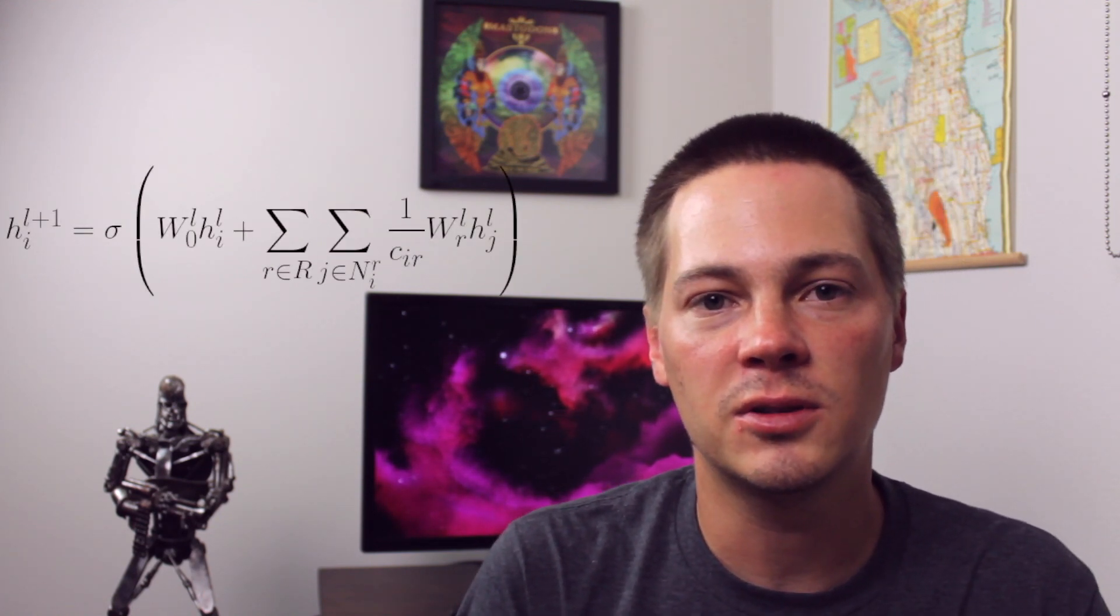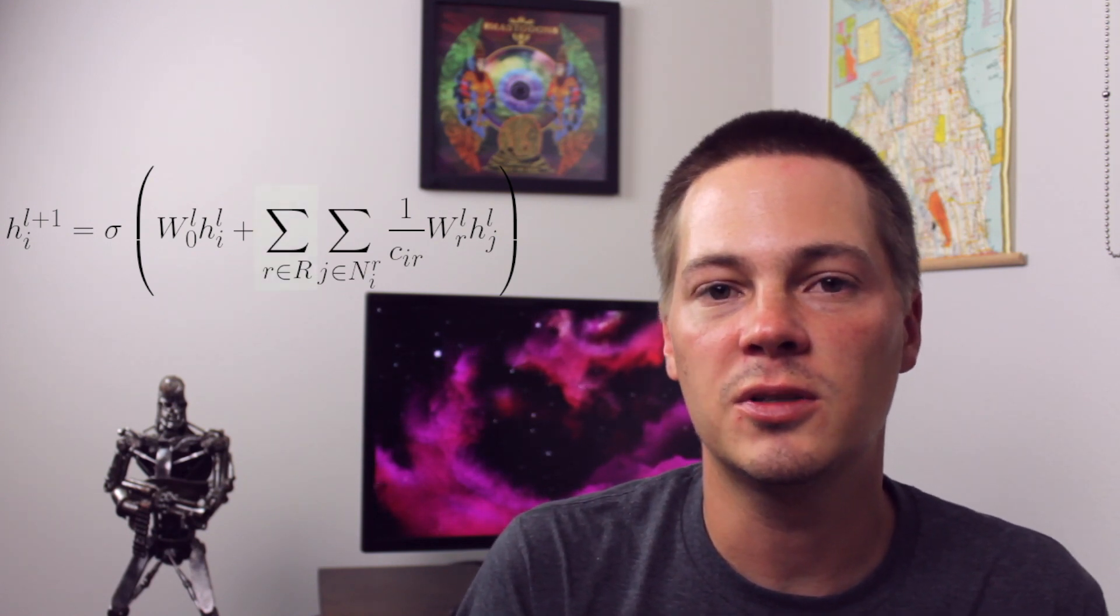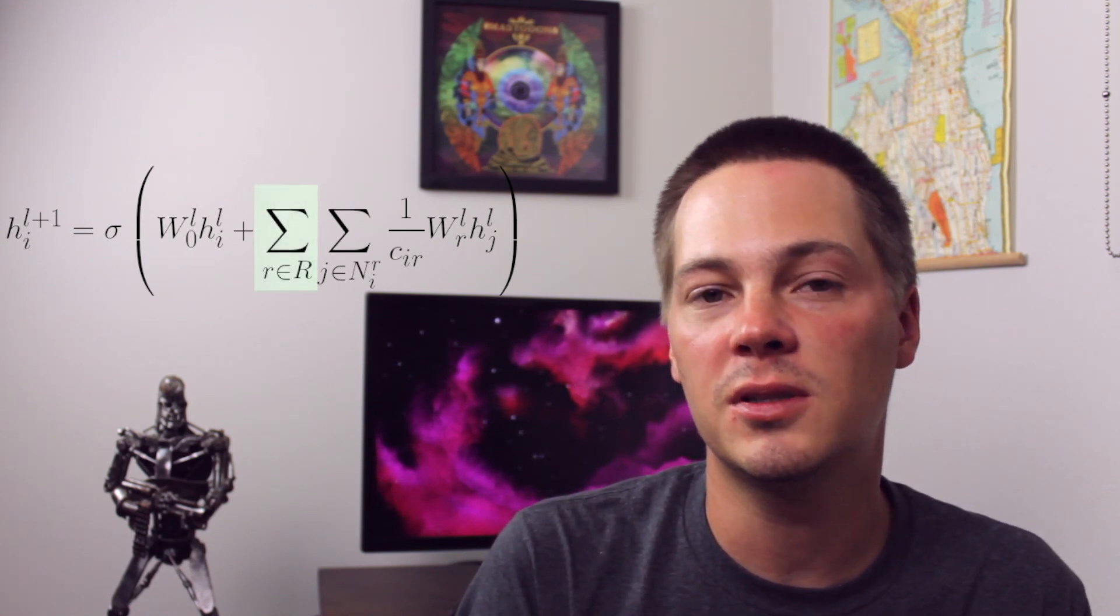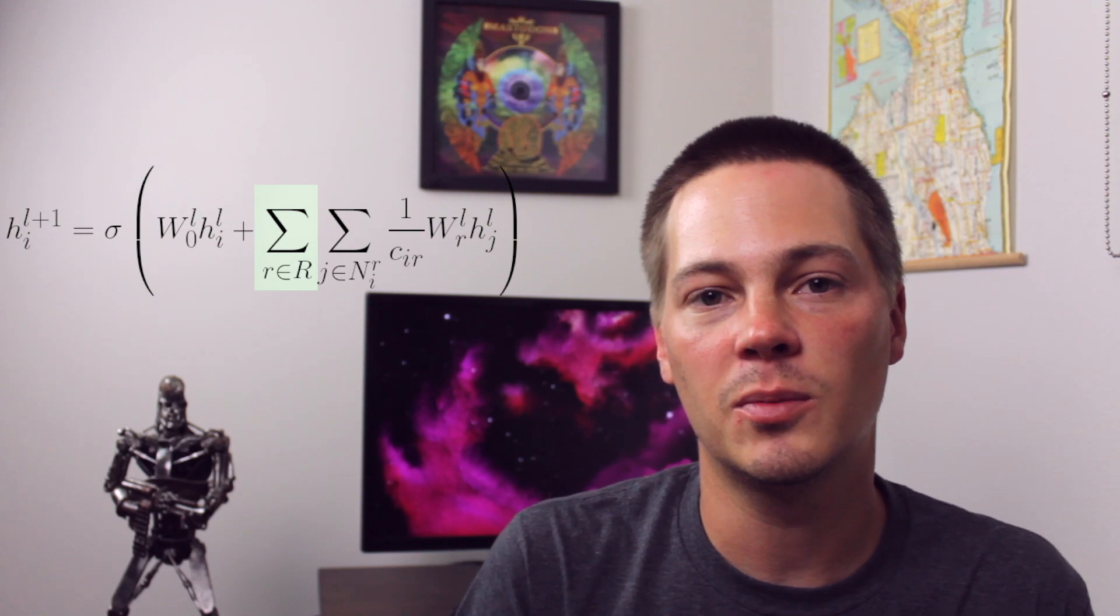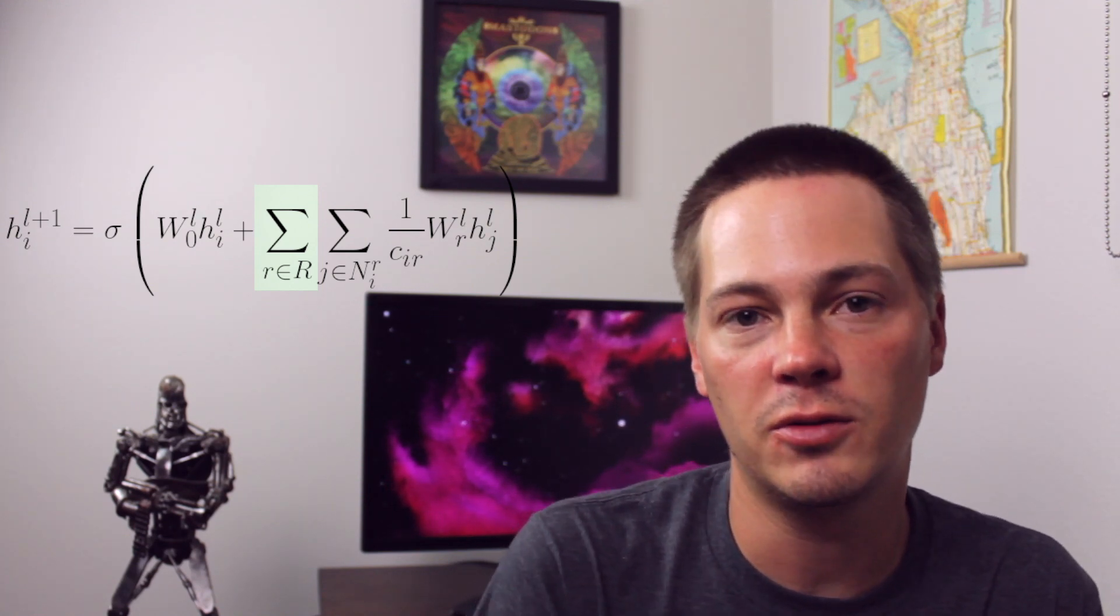So let's get some more understanding by looking at the equation that's comparable to the previous one, but now in the world of RGCNs. So the first thing you notice is there's another sum term, and this one is over R. So R represents the relation type. So these are the person blocks person and the person follows person.